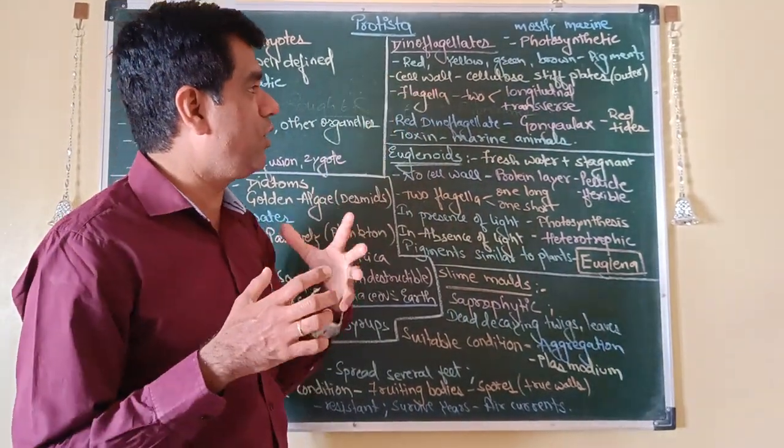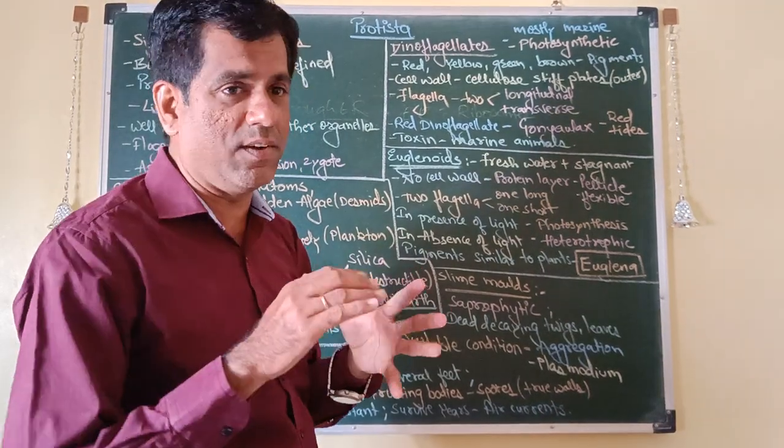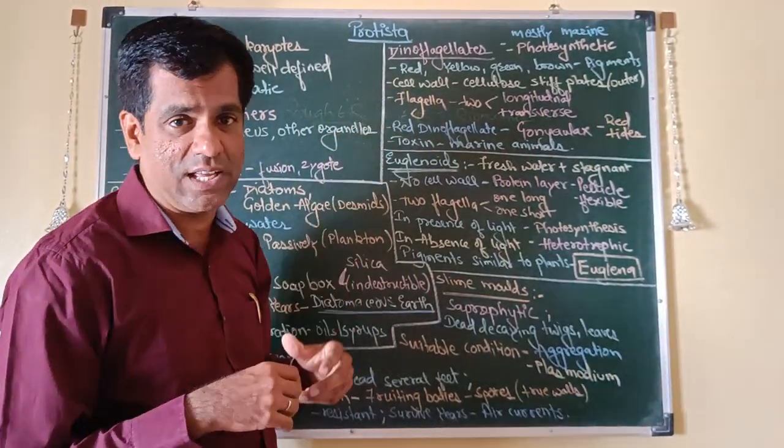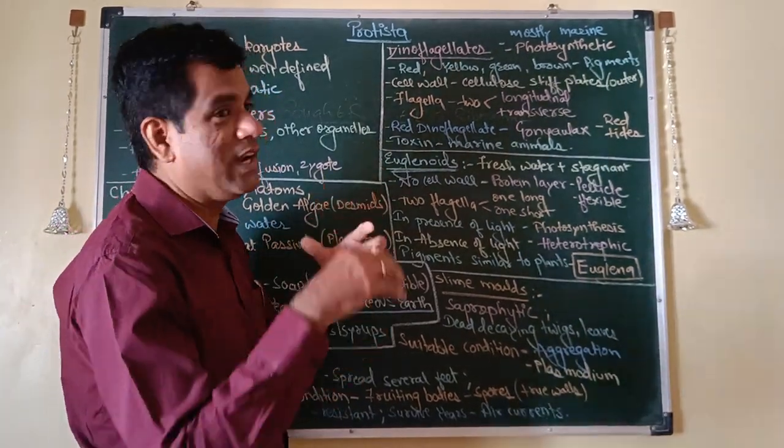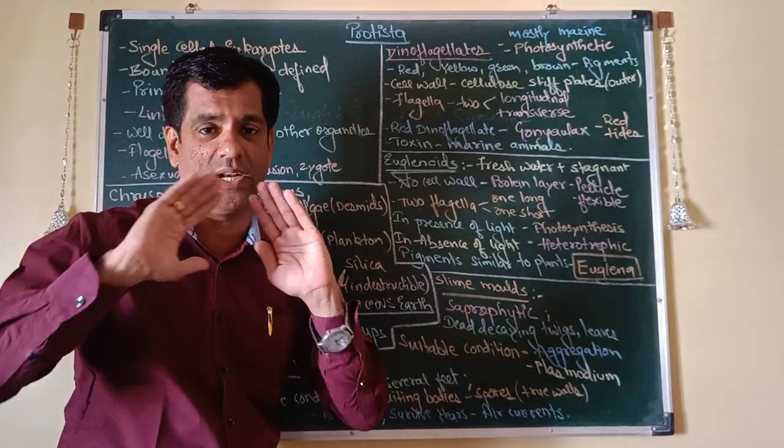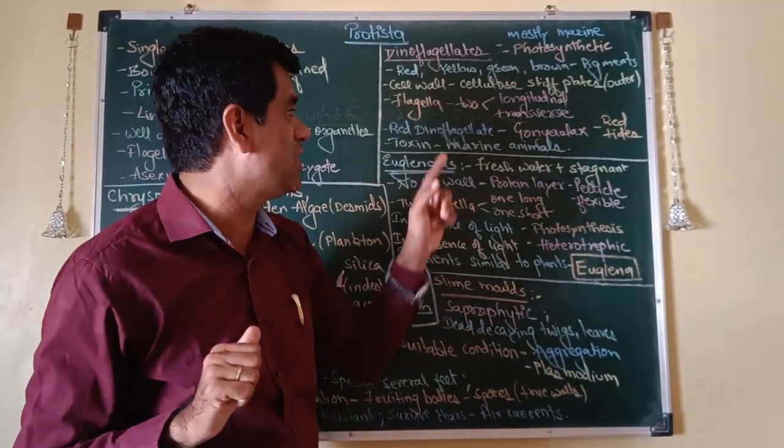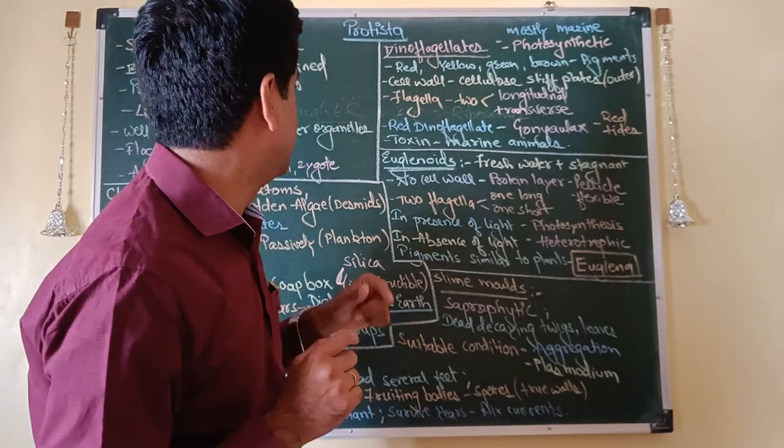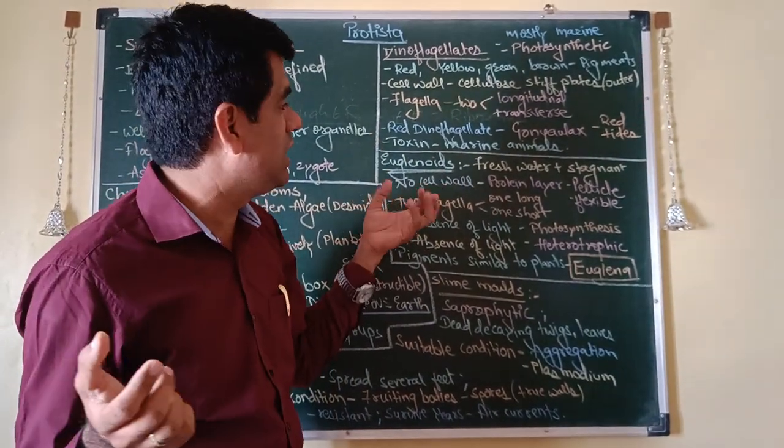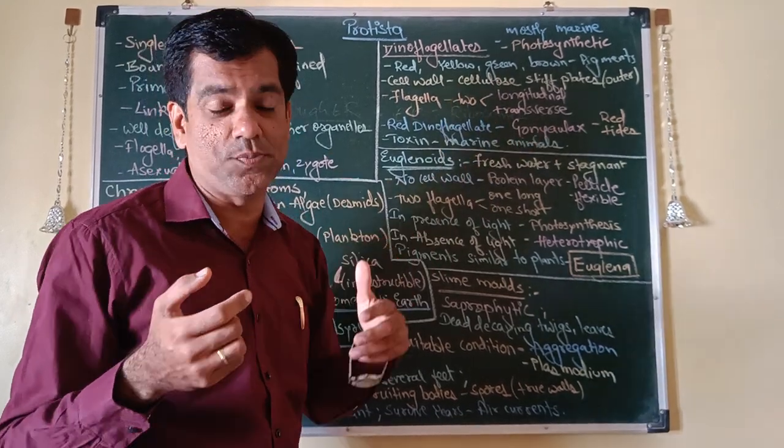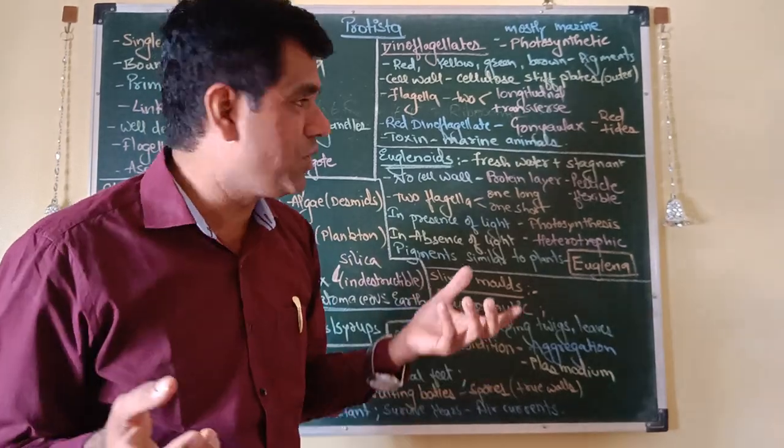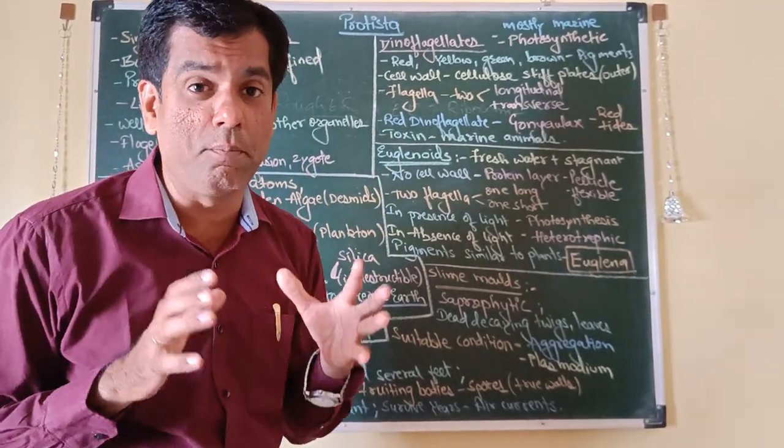They have a cell wall which is made of cellulose stiff plates. They have flagella, not one, but two. One longitudinal and other is transversely placed between those cellulose stiff plates. One famous dinoflagellate is Gonyaulax, which is responsible for those red tides, and they may produce various toxins which are toxic to your marine animals.